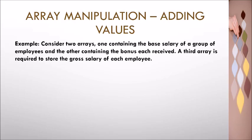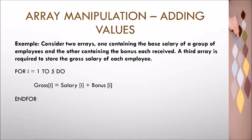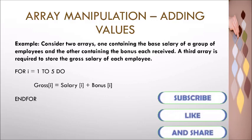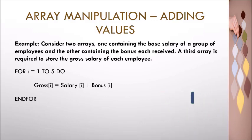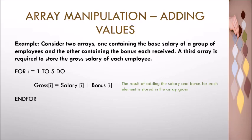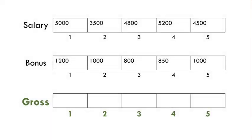The solution shows a for loop header which contains the keyword 'for', followed by the counter variable i and the total number of iterations required. The array called 'gross' is a new array that will store the generated total of the added values in the salary and bonus arrays. The counter variable i is used to ensure that the index of each array corresponds and identifies the correct values.